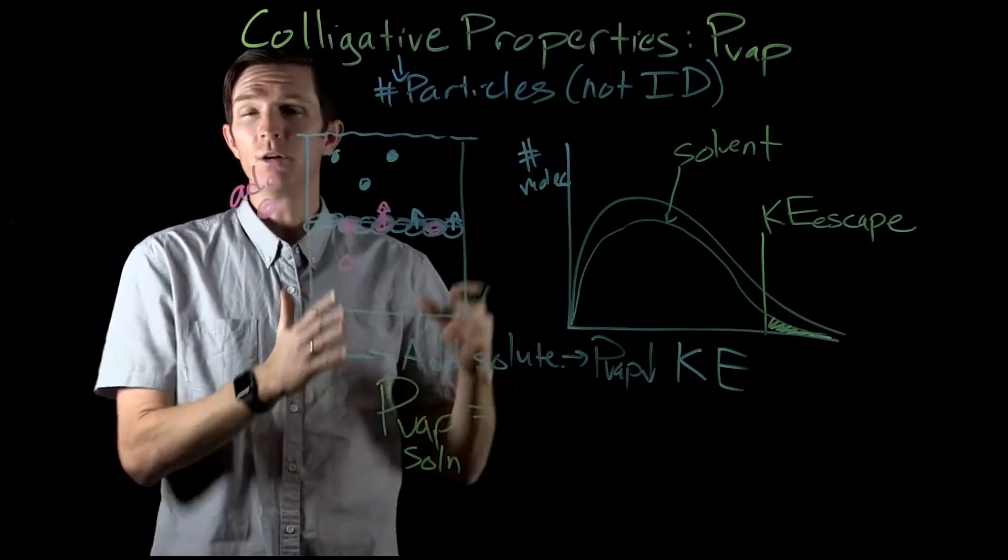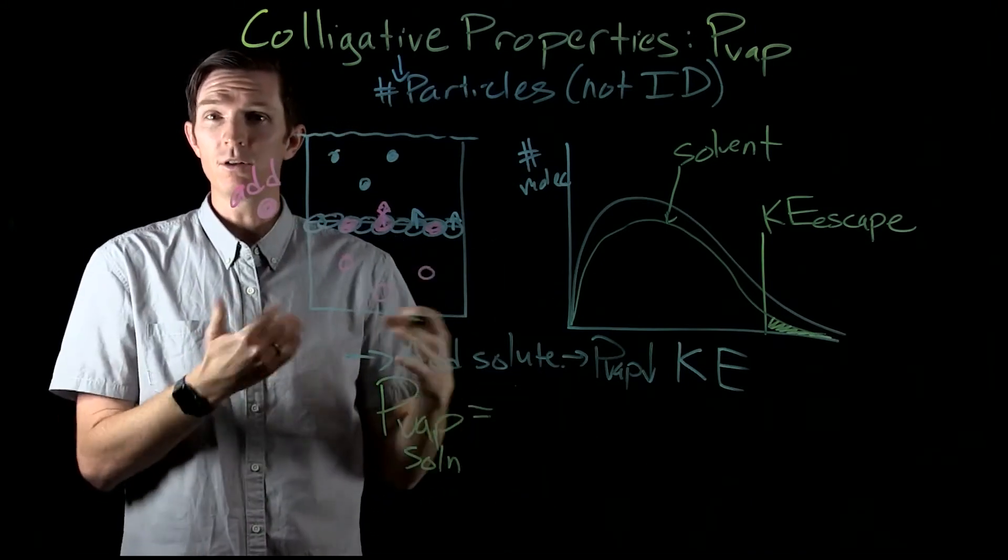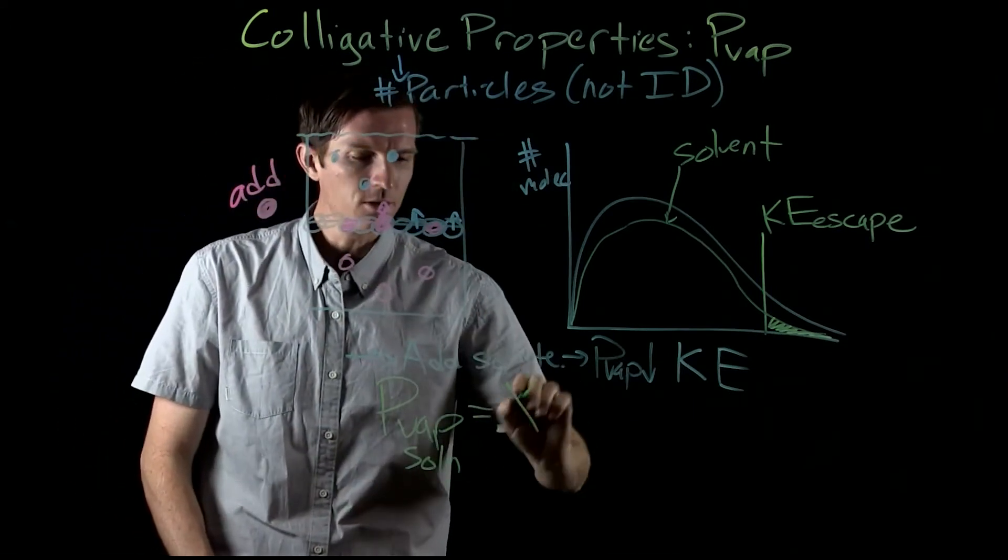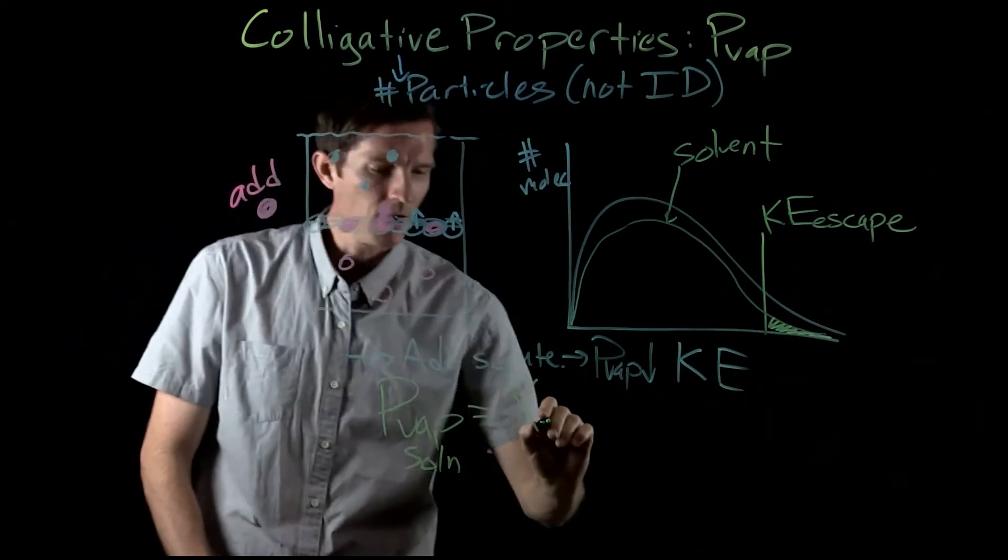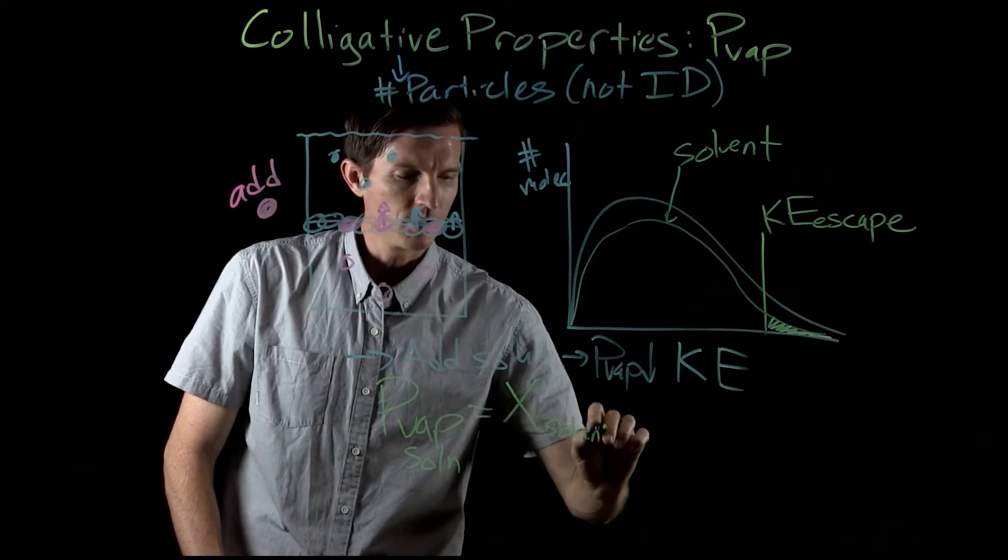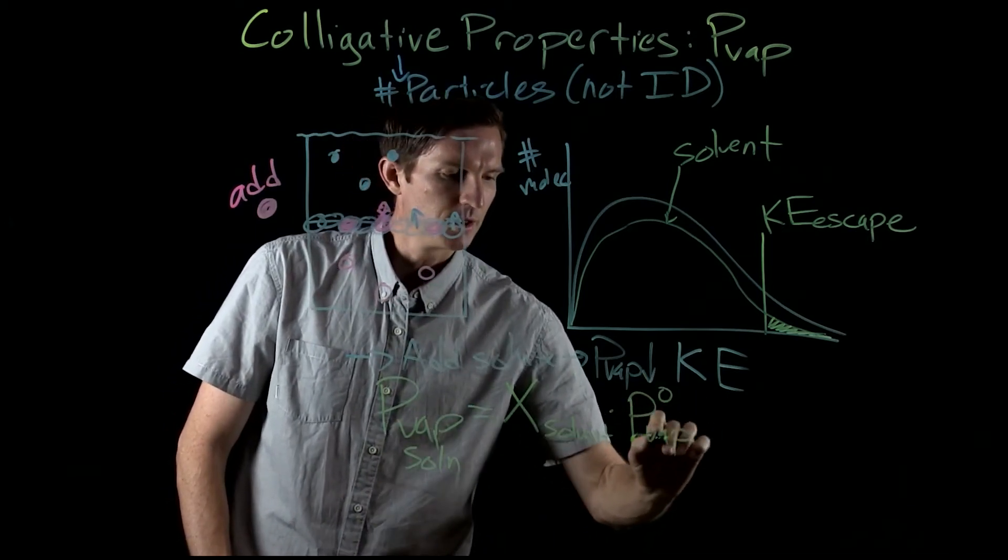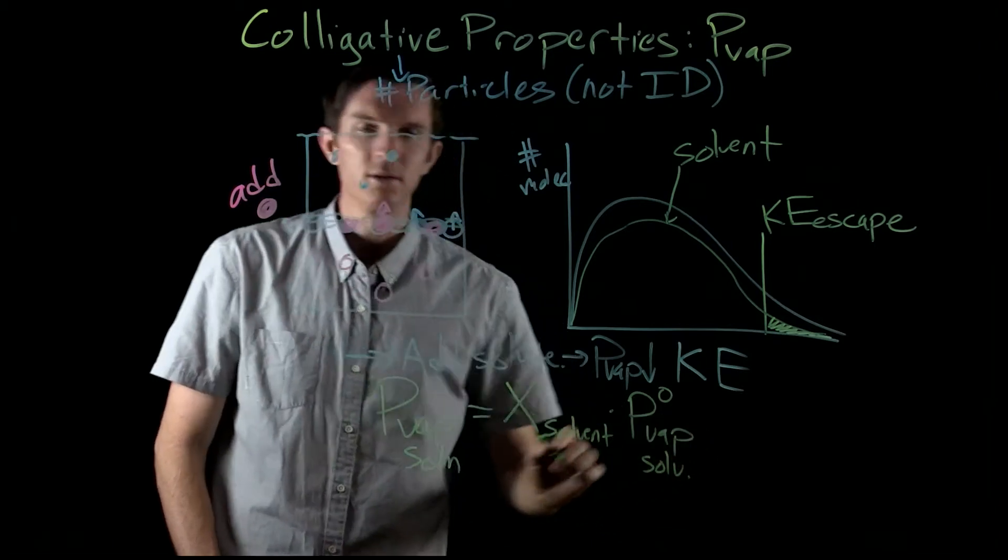So the greater the ratio of solvent to solute or solvent solution, the more particles that will leave. And so we're going to use the mole fraction of our solvent times the vapor pressure of that pure solvent.